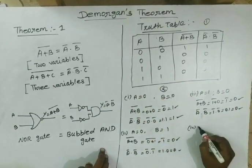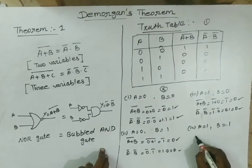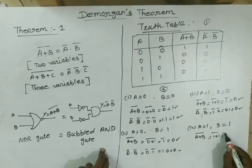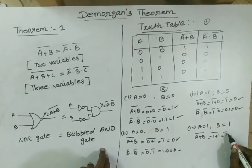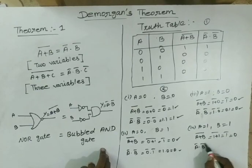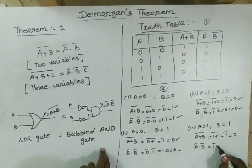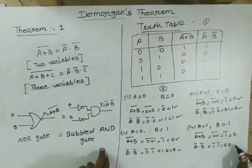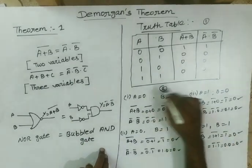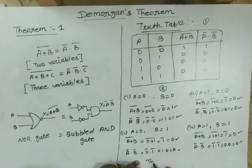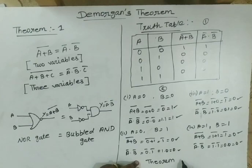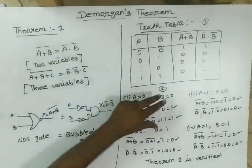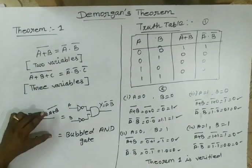Fourth case: A=1, B=1. A plus B whole bar = 1 plus 1 whole bar = 1 bar = 0. A bar dot B bar = 1 bar dot 1 bar = 0 dot 0 = 0. That is called De Morgan's first theorem — verified. Equation, circuit diagram, and truth table — all three methods verified Theorem 1.